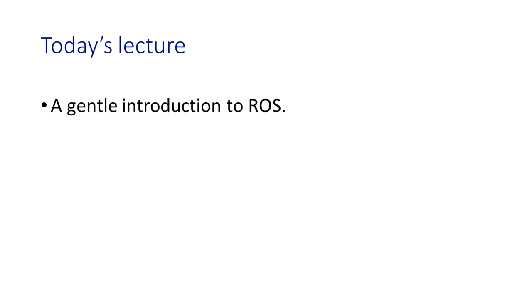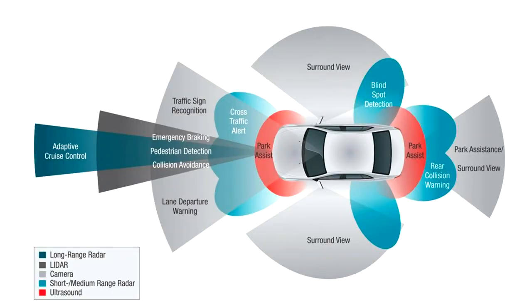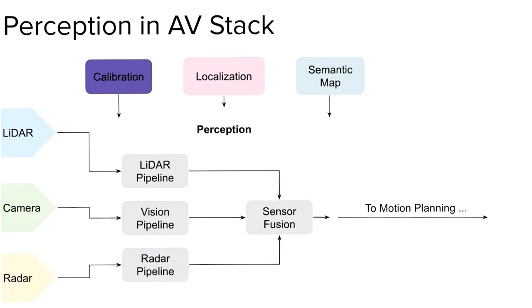Today we are going to understand what ROS is. I'll give you some intuition followed by the basic commands you all have to know. Previously we saw that a self-driving car has to do quite a bit in order to make good decisions about driving in the real world — perception, planning, and control. We take data from our suite of sensors: LiDAR, radar, GPS, cameras, ultrasonic — and we ingest all this data to make sense of the world.